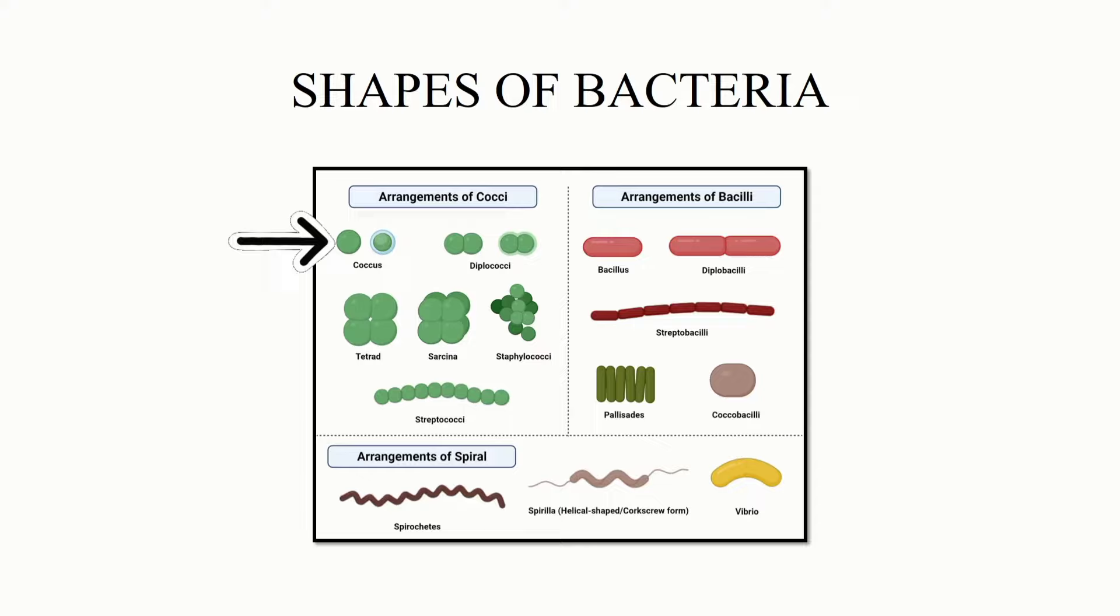As in this picture, you can see the arrangement of cocci, bacilli, and spiral. This is a single round shape, so it is termed as cocci. If the cocci exist in pairs, it will be termed as diplococci. If four cocci occur together, it will be termed as tetrad. If eight or more exist together, it is termed as sarcina. And as you can see, the cluster is termed as staphylococci, and the chain is called streptococci.